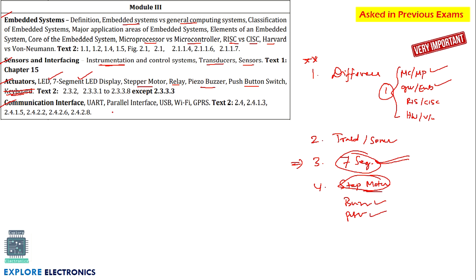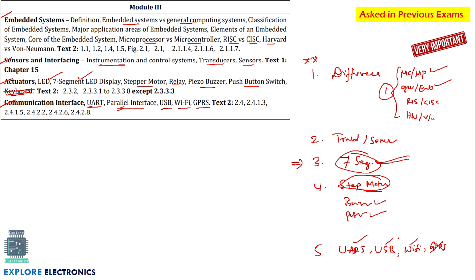Coming to the fourth chapter of Module 3, we have UART, parallel interface, USB, Wi-Fi, and GPRS — these are block diagrams with a little bit of explanation. You can expect one question from UART. UART, USB, and Wi-Fi are very important here. GPRS can be neglected. These three — UART, USB, and Wi-Fi — are very very important for the exam.